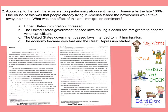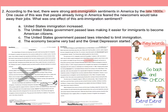Now let's examine this question: according to the text, there were strong anti-immigration sentiments in America by the late 1800s. We've already got some key words — anti-immigration and late 1800s. If you come back into the text, while you may not find 'anti-immigration' easily, when it says late 1800s, you can eliminate information from paragraph two because that paragraph is talking about the 1600s through 1775. The first wave covers 1820 to 1870, but it's not necessarily late.